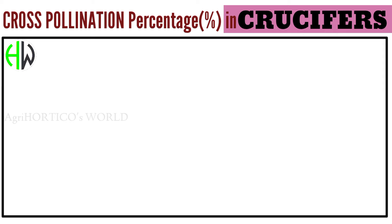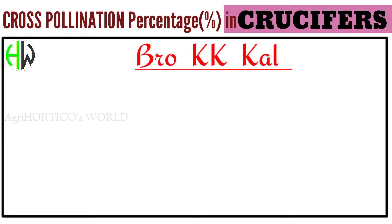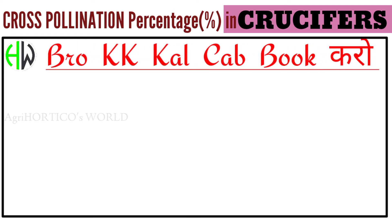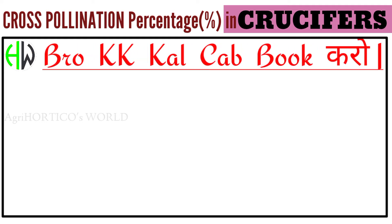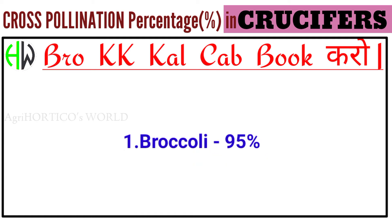Cross pollination percentages of crucifers. For this trick, all you need to remember is the simple code: 'Bro KK Kal Kabuk Karlo.' Let us see what this code means. 'Bro' stands for broccoli, which has the highest cross pollination percentage among crucifers at 95 percent. 'KK' stands for kohlrabi, which stands second with 91 percent.